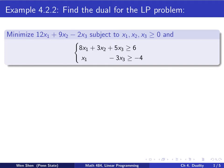This is example 4.2.2 in your textbook. We need to find the dual for the following LP problem. The problem is: minimize 12x1 + 9x2 - 2x3 subject to x1, x2, x3 ≥ 0 and two constraints with greater than equal signs. So take a look at this problem.